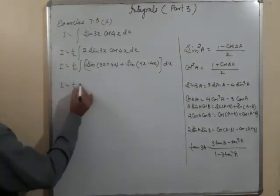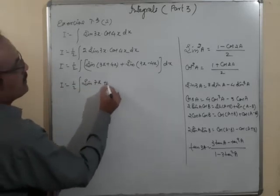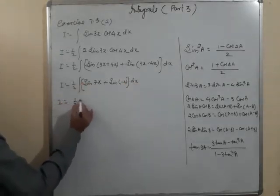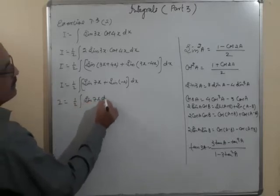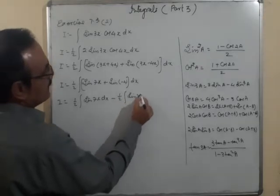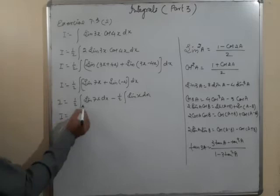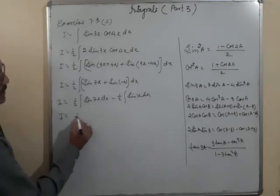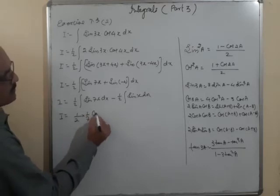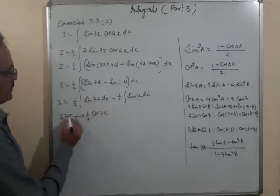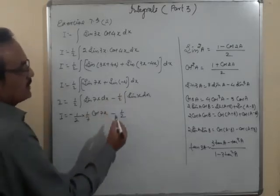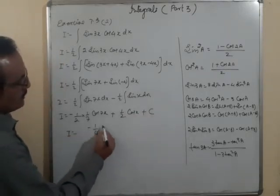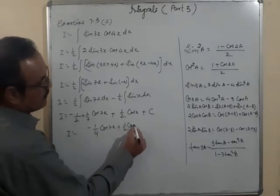So I = (1/2)∫sin7x dx − (1/2)∫sinx dx. Separating and integrating both sides: let 7x = T, 7dx = dT, dx = dT/7. Integration of sin7x = −cos7x/7. And integration of sinx = −cosx. Therefore I = −(1/14)cos7x + (1/2)cosx + C.